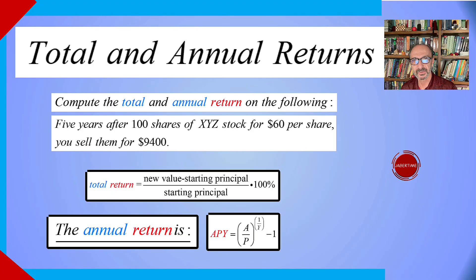Total and annual returns. Compute the total and annual return on the following five years investment for 100 shares of XYZ stock at $60 per share. If you do the math and multiply $60 times 100 shares, that will be $6,000.